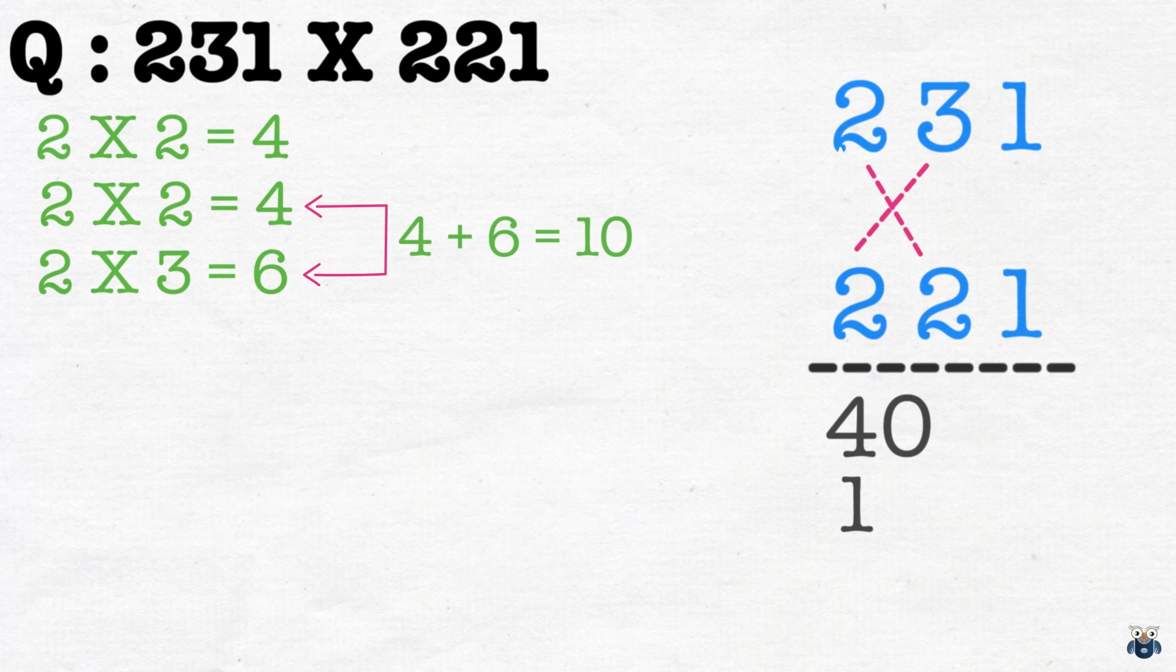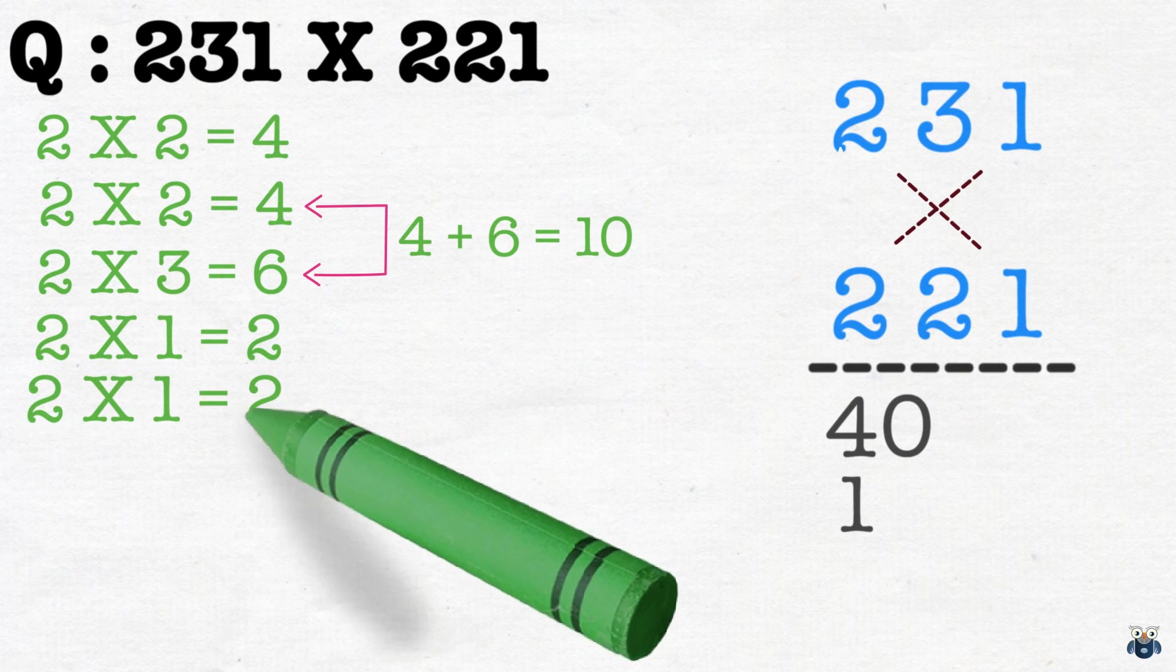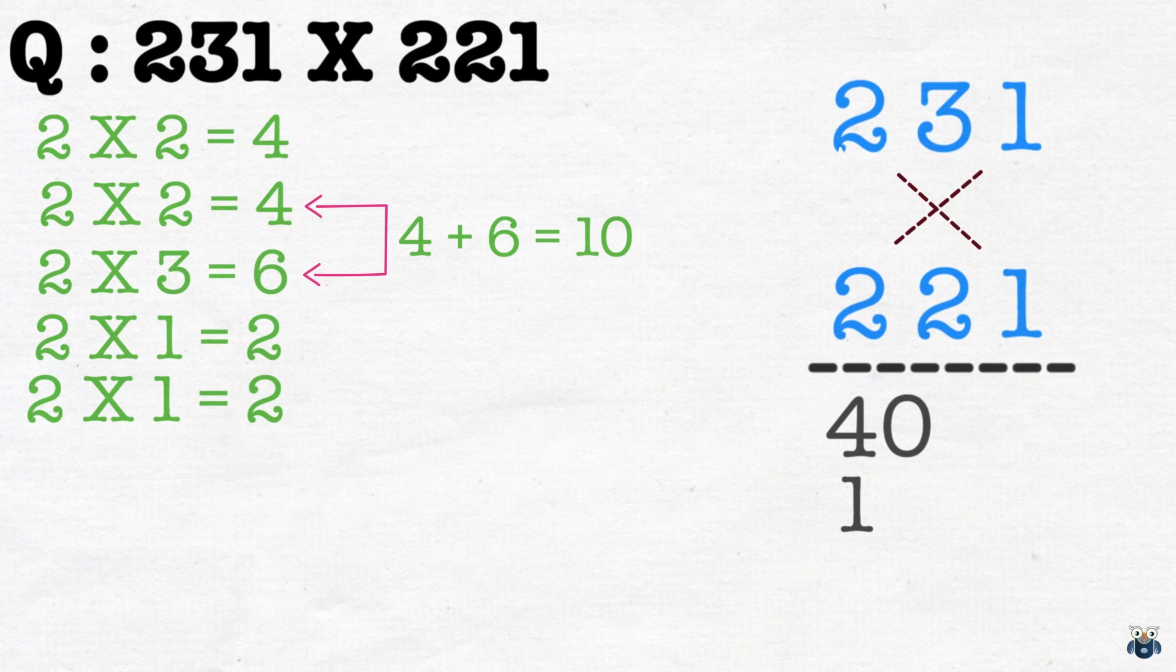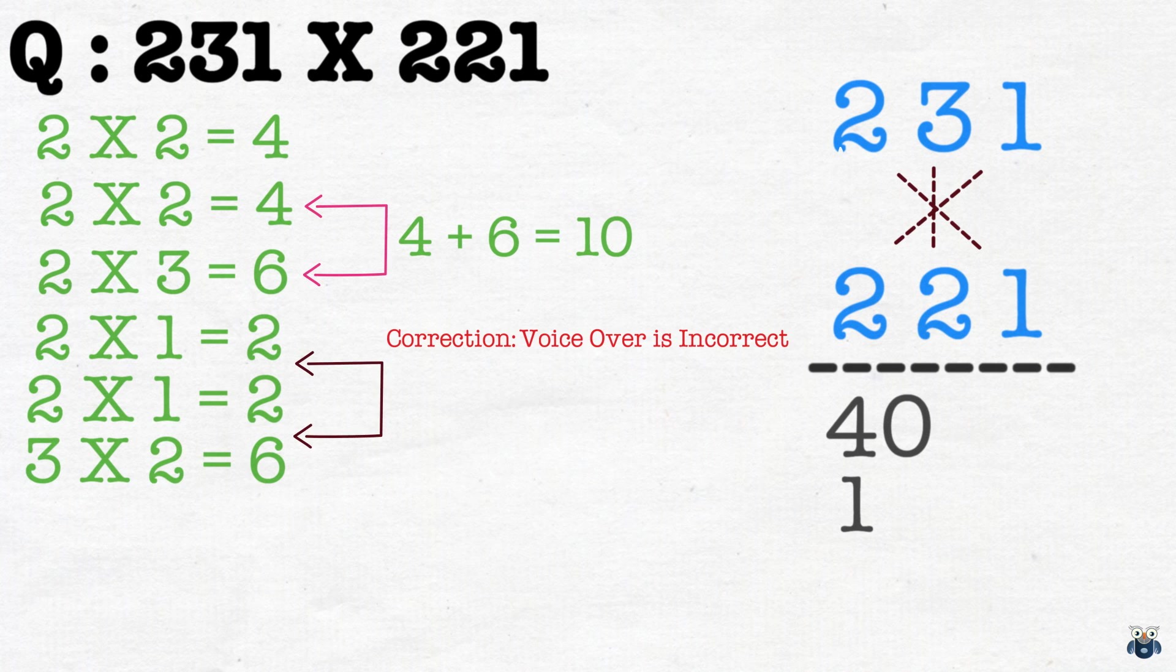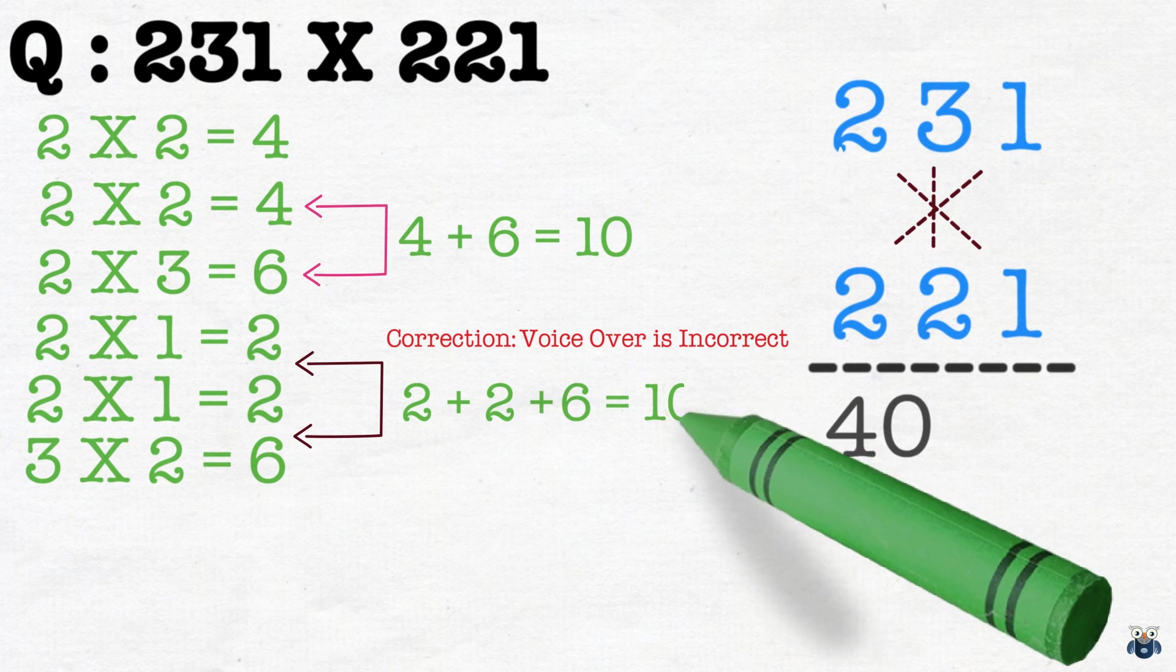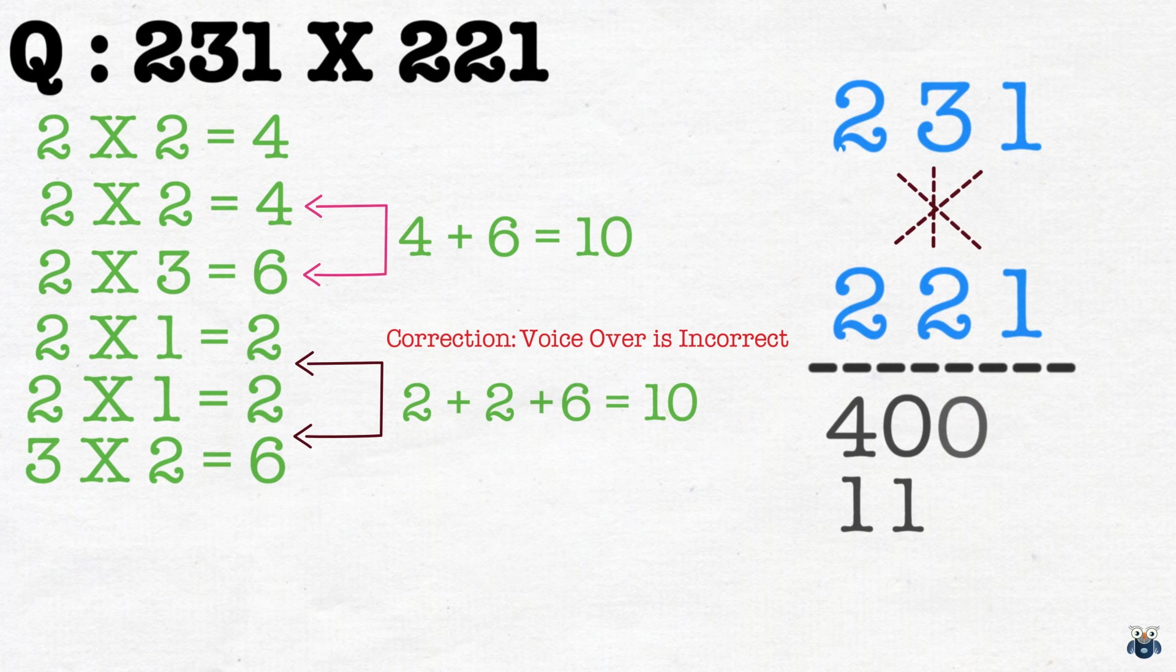Our next operation involves 3 steps. We first multiply the leftmost top number with the rightmost bottom number. 2 times 1 is 2. We then multiply the leftmost bottom number with the rightmost top number. 2 times 1 is 2 again. And for the third step, we multiply these two numbers in the middle. 3 times 2 is 6. And adding all numbers, we get 2 plus 1 plus 6 which is 10. Let's write this down.